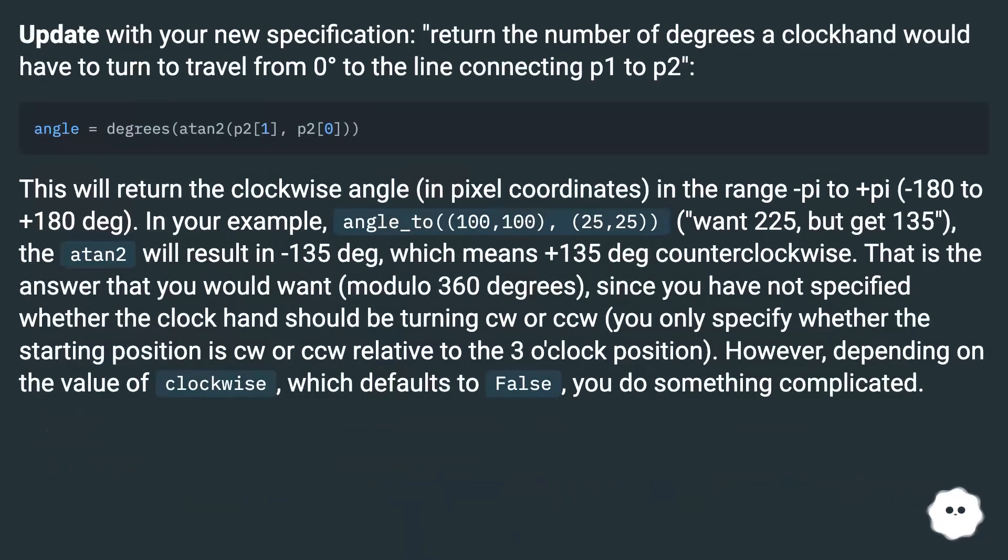Update with your new specification: return the number of degrees a clock hand would have to turn to travel from zero degrees to the line connecting p1 to p2. This will return the clockwise angle in pixel coordinates in the range -π to +π, -180 to +180 degrees.